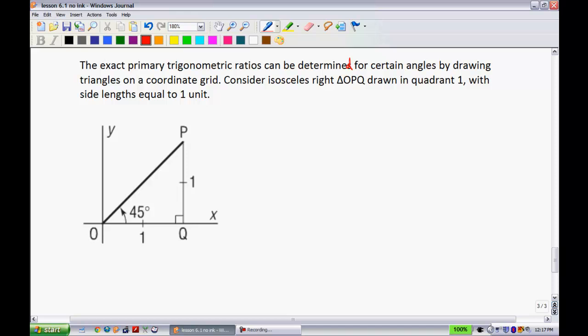This example kind of that we're going to do here, we're going to build on a lot more in the next unit. I think you'll see that your homework for this section is going to be fairly straightforward. The note here, the exact primary trigonometric ratios can be determined for certain angles by drawing triangles on the coordinate grid. Consider isosceles triangle OPQ drawn in quadrant one with side lengths equal to one unit. What we can see here is we can determine all of these trig ratios with the information that we have. For instance, if we start by determining this missing side length OP, how can we figure out that missing side length OP? Well, we just have to use Pythagoras. So, let's make a little note here. To determine OP use our good friend Pythagoras.